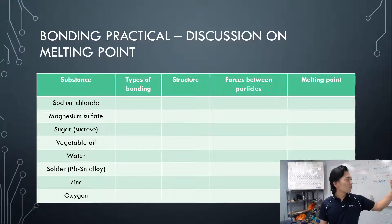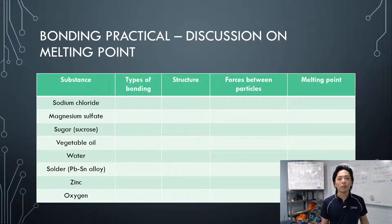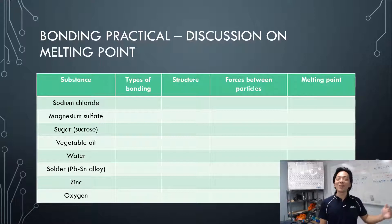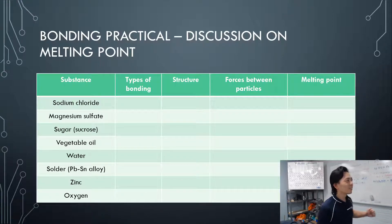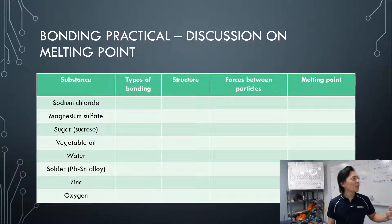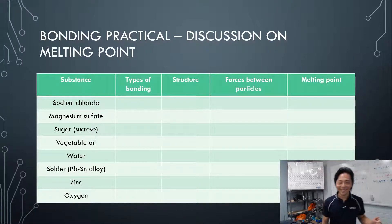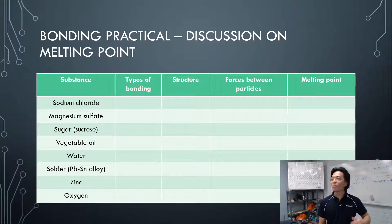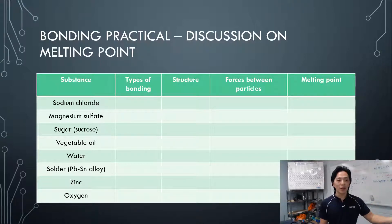Vegetable oil and water were almost the same — they were already melted, so you didn't have to test for melting point. Besides, the vegetable oil would catch fire. So now we know the ranking in terms of melting point.